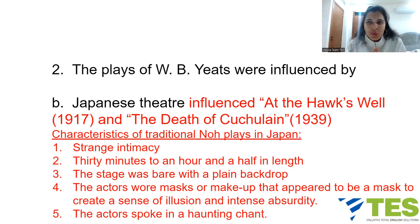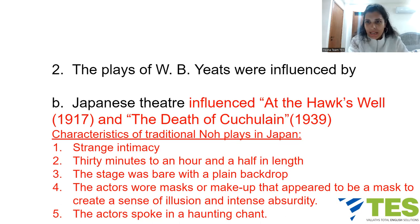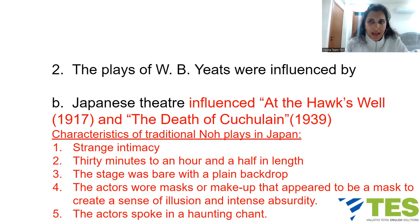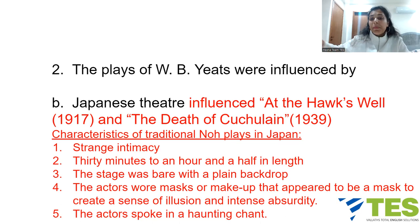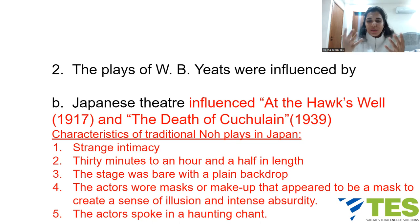Yeats borrowed the structural elements of Noh for two plays: 'At the Hawk's Well,' published 1917, and 'The Death of Cuchulain,' published 1939. Characteristics of traditional Noh plays include: strange intimacy; 30 minutes to an hour and a half in length; a bare stage with a plain backdrop; actors wearing masks or makeup appearing as masks to create illusion and intense absurdity; and actors speaking in a haunting chant.